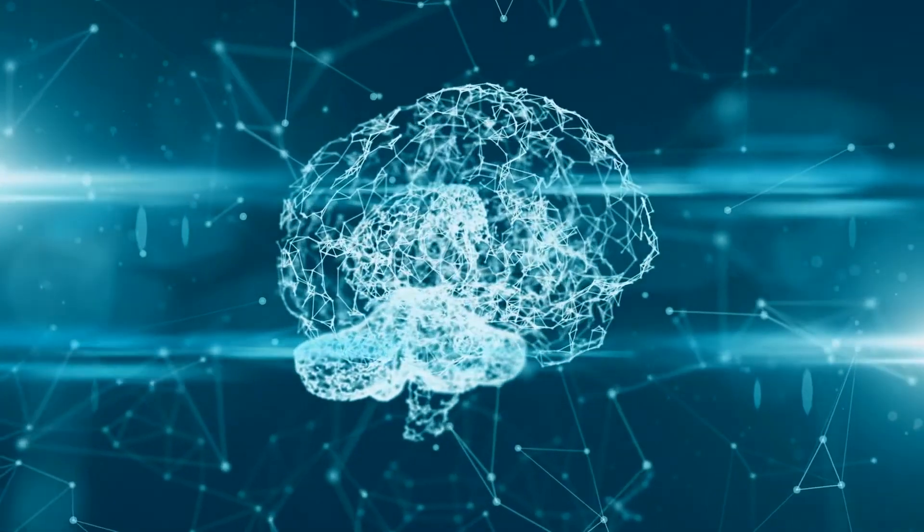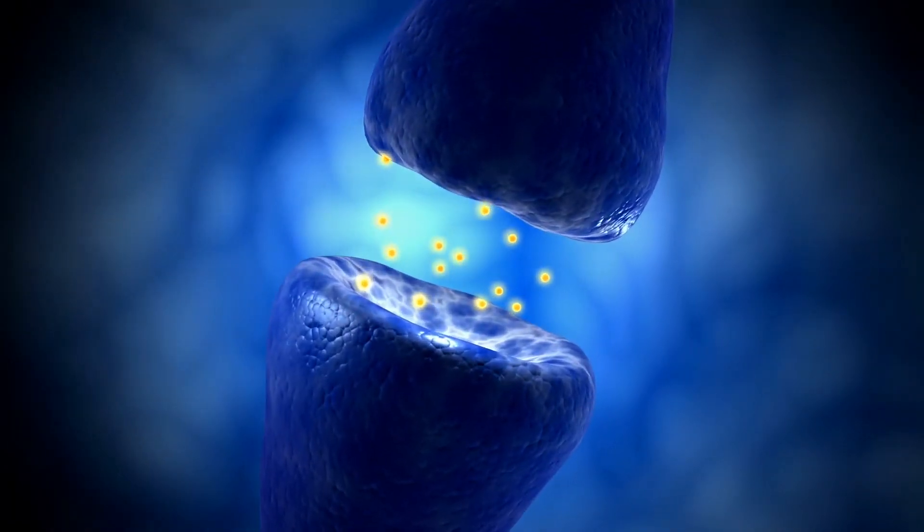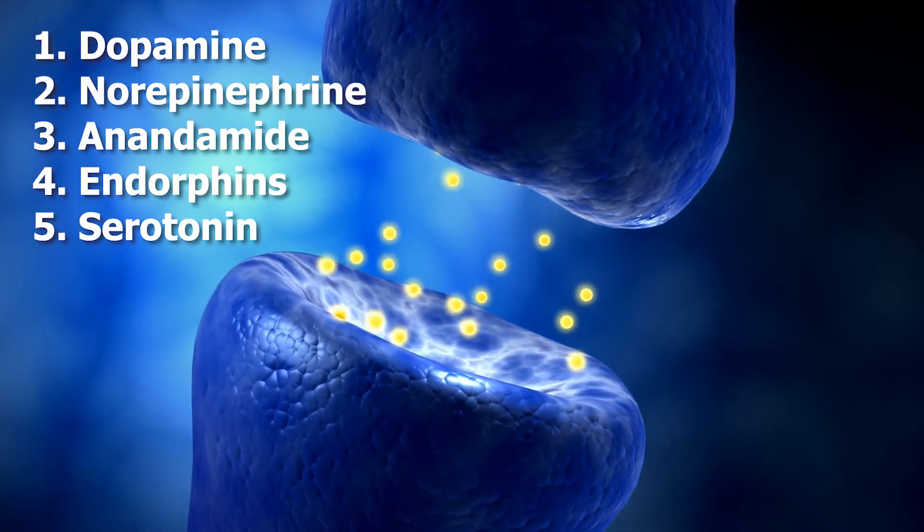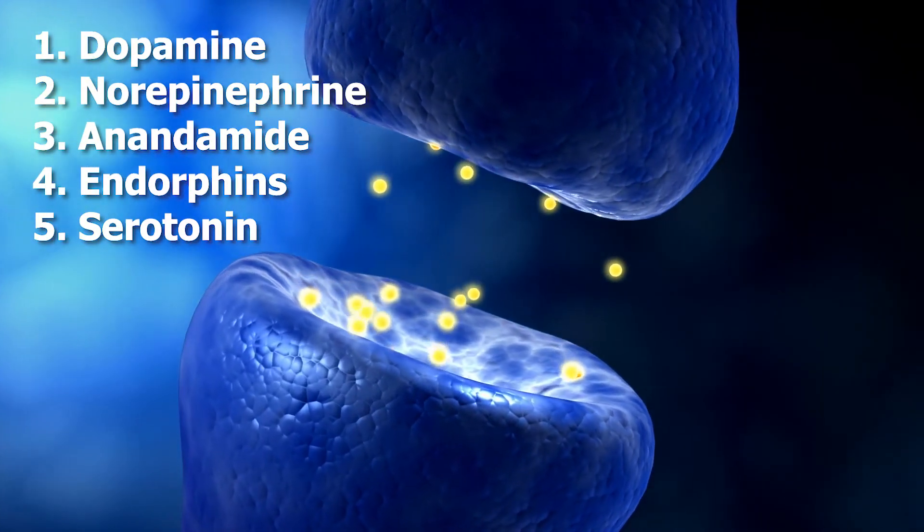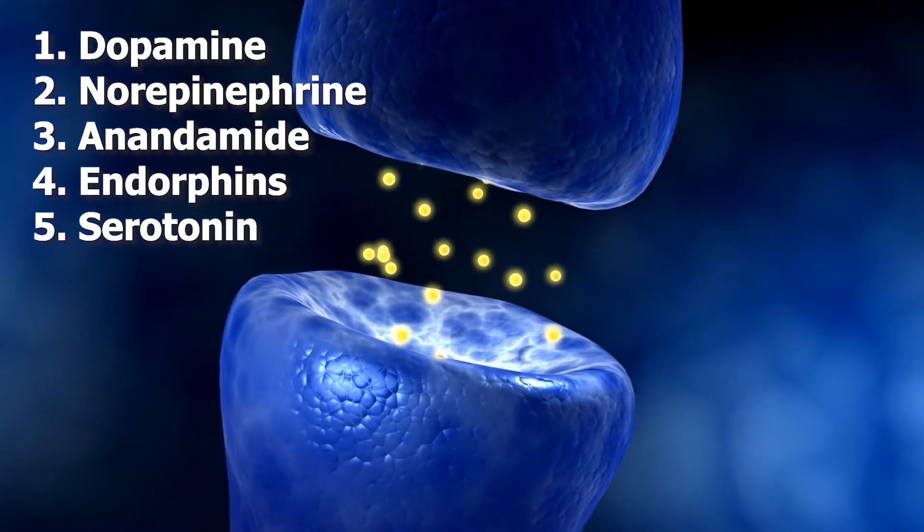Flow states have a spectrum. Csikszentmihalyi modeled mental states based off of the balance of your skill level to the difficulty of the task at hand. Your shower thoughts would be considered what's called a low-grade flow state. And when you move up the scale of challenge level for the task at hand, the flow state that you enter into actually begins to consistently produce the same cocktail of neurochemicals that make you feel, well, they're the thing that keep you coming back to the things that you're good at. So they make you feel pretty great.